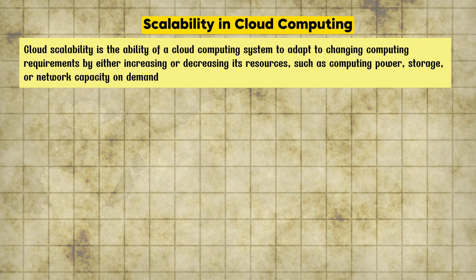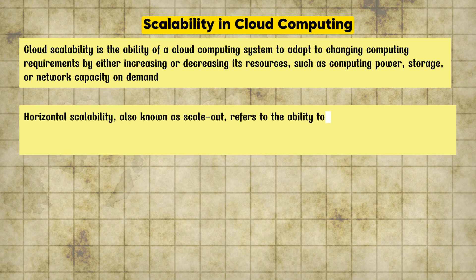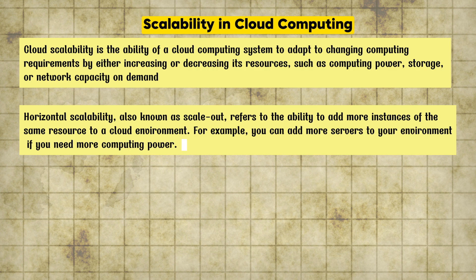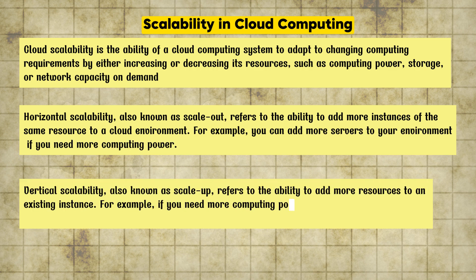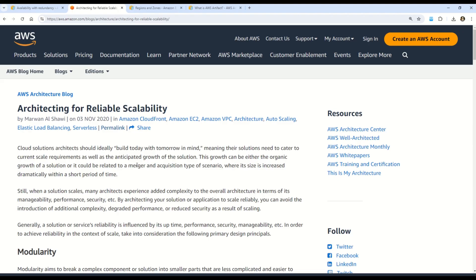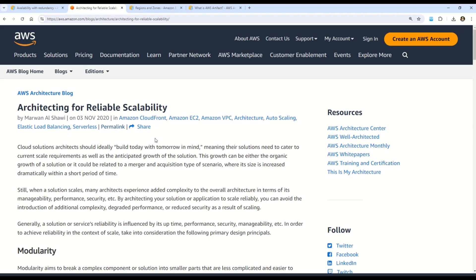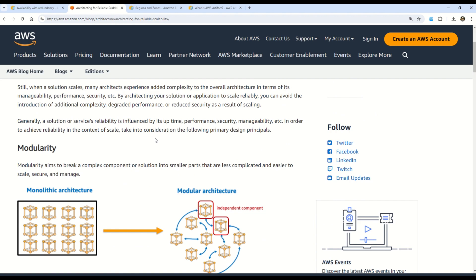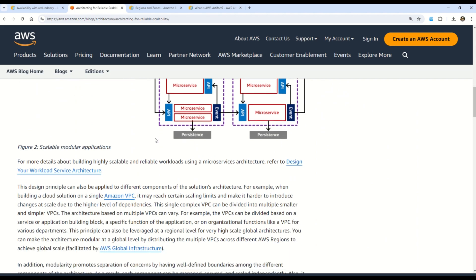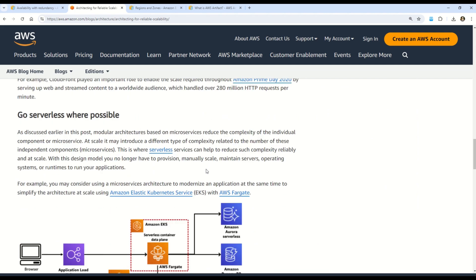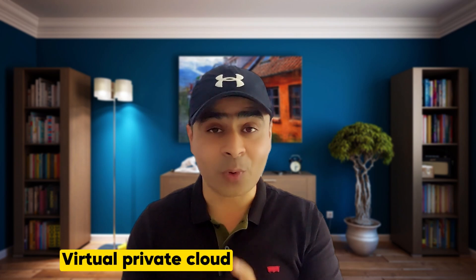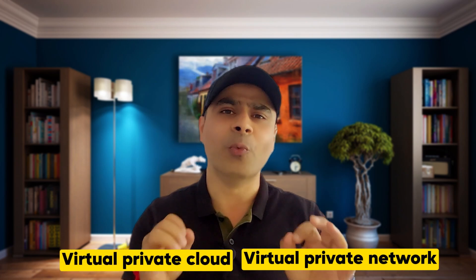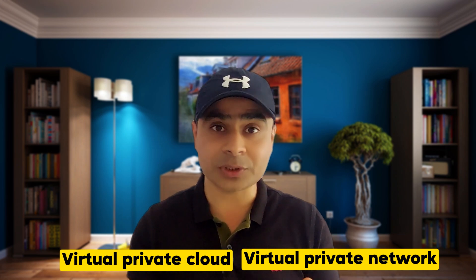Scalability is the architecture design principle that focuses on the ability of a system to handle increases or decreases in workloads by adding or removing resources in a linear manner. It involves designing a system that can be easily scaled up or down to accommodate changes in demand without impacting performance. There are two types: horizontal scaling, which means adding more instances, and vertical scaling, which means increasing the capacity of existing instances. Documentation is available for deeper understanding.